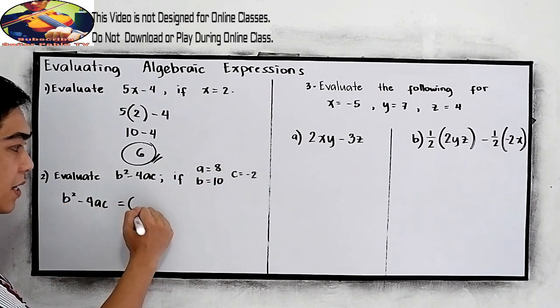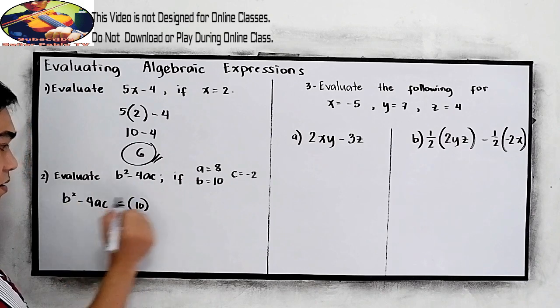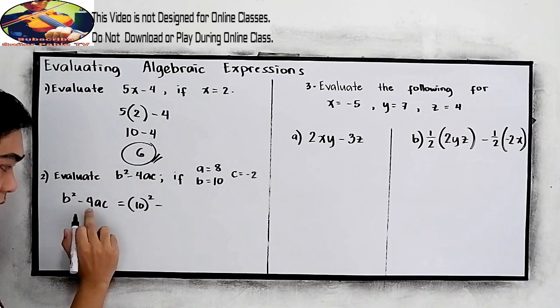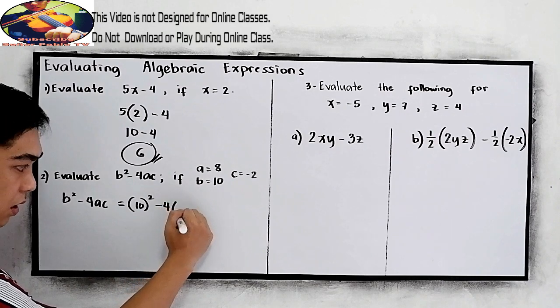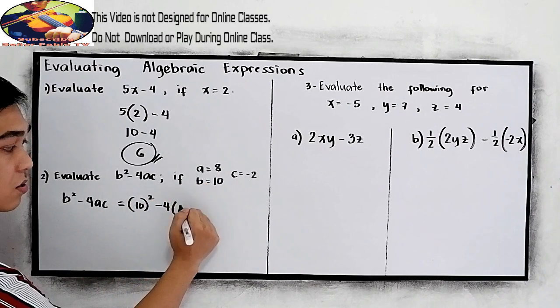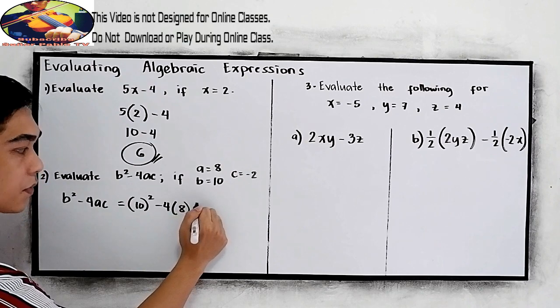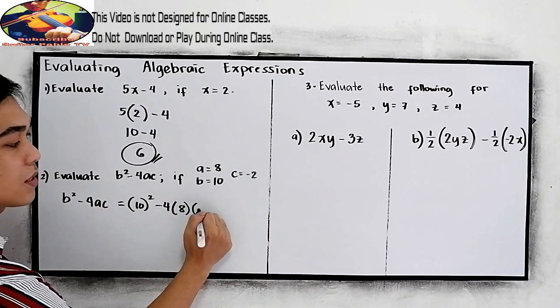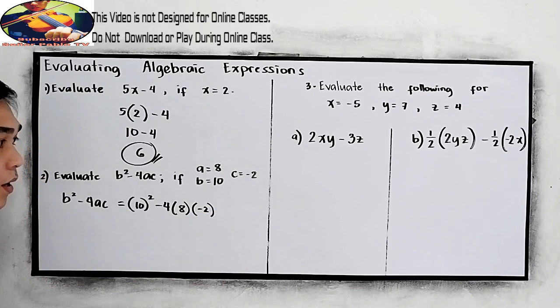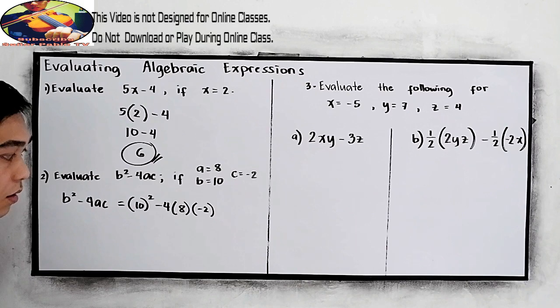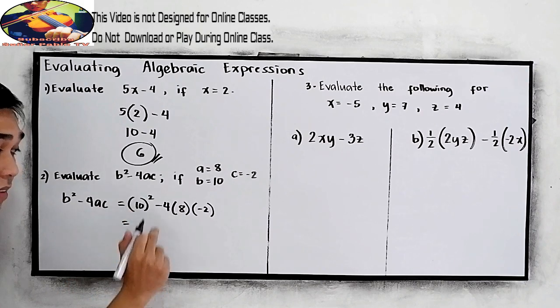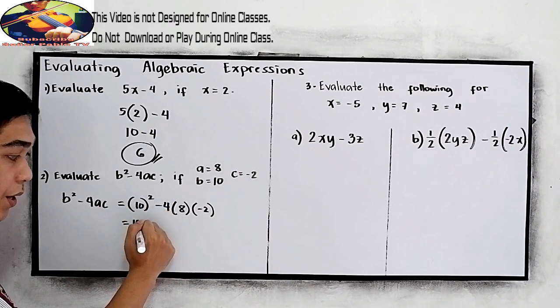So our b is 10. Write the square, copy the minus sign, copy 4, then a is 8. So 8, c is negative 2. Now, after substituting, simplify. So 10 squared, that is 10 times 10, which is 100.